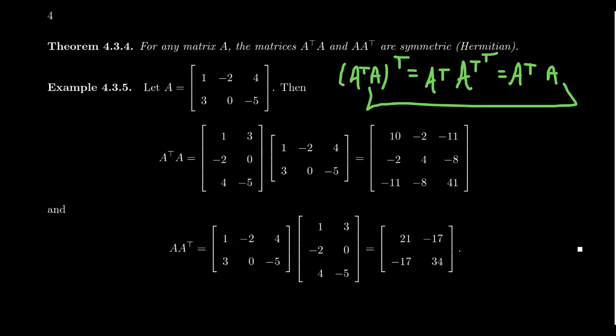Notice that A transpose A and A A transpose are not the same symmetric matrix. Since A is a 2 by 3 matrix, A transpose A turns out to be 3 by 3, and A A transpose turns out to be 2 by 2 — the two numbers involved in the shape of A. Of course, if you're working with complex matrices, you take the conjugate transposes in that situation. Just make sure you take the conjugates when you transpose a complex matrix.